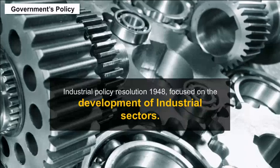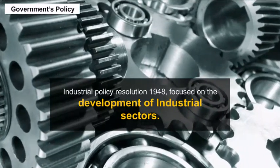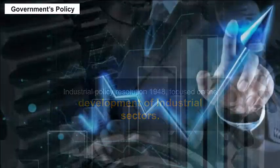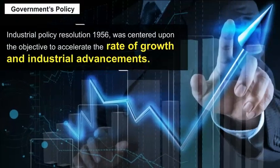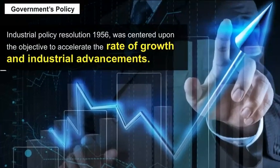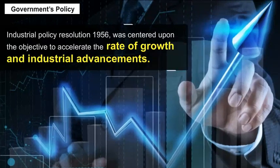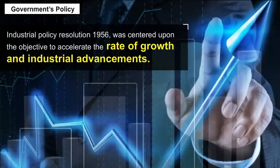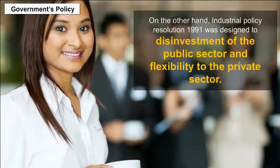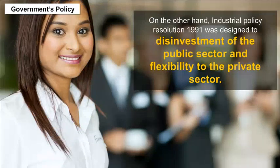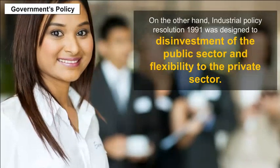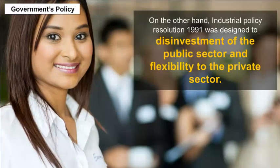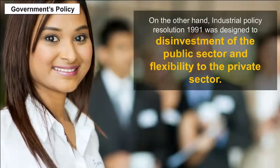Government's policy. Industrial Policy Resolution 1948 focused on the development of industrial sectors. Industrial Policy Resolution 1956 was centered upon the objective to accelerate the rate of growth and industrial advancements. Industrial Policy Resolution 1991 was designed for disinvestment of the public sector and to provide flexibility to the private sector.